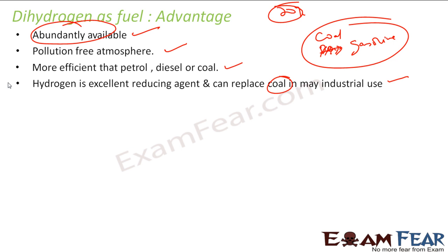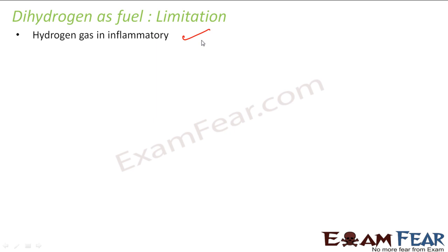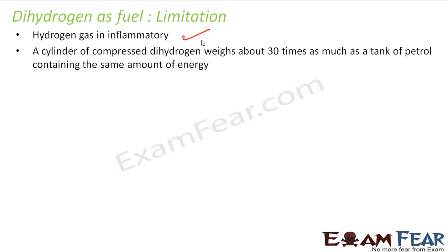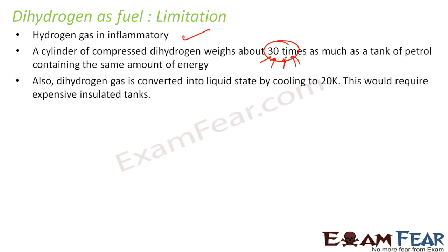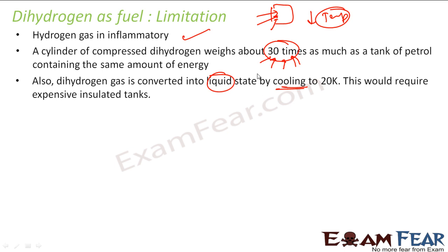There are some limitations also. The first limitation is it is highly inflammable — it burns easily, so it's very difficult to store. The second thing is the volume required is more — it is almost 30 times bigger; you need a 30 times bigger tank to store the same amount of hydrogen gas to run a car the same distance, because though the mass in grams is less, the density is low so the space required is more. And if you want to convert it to liquid state by cooling, a huge amount of energy is required to cool it and to maintain the temperature.